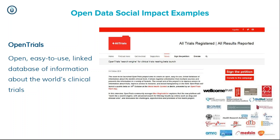There are more examples around open information in healthcare trials — making information open, easy to use, and creating a linked database. That's a really high quality open database that allows you to understand the links between different clinical trials across the world — where the same or very similar clinical trials have been taking place in different areas. It might lead you not to undertake your own clinical trials because it's already been done in a similar situation elsewhere.